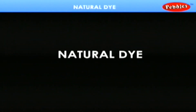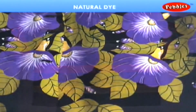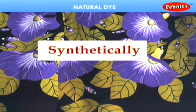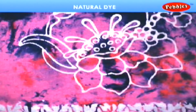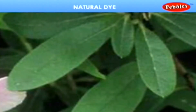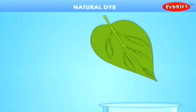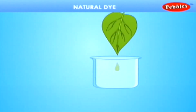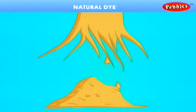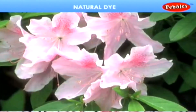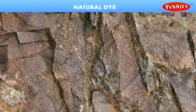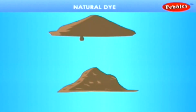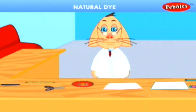Natural dye. Nowadays, nearly all dyes are made synthetically, but in the past, most of these were made from plants like leaves, woods, flowers, sand, and stones. Let us dye a handkerchief with a natural dye.